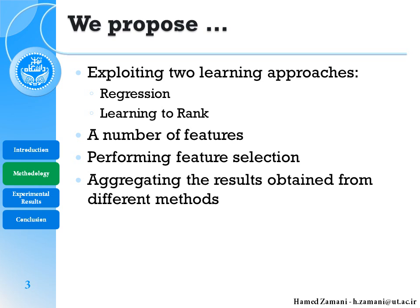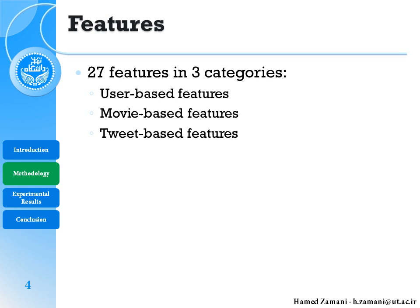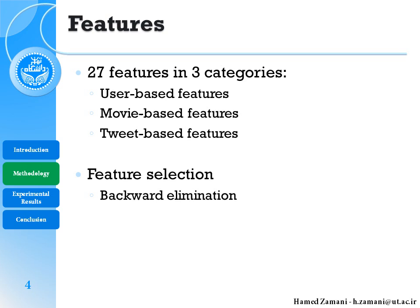We have defined 27 features in three categories: user-based, movie-based, and tweet-based. The user-based features contain only user-specific information, the movie-based features contain only information about the movie such as average rating, and the tweet-based features contain all the information about the tweet including the user's rating of the movie. We also performed feature selection using the backward elimination technique; features retained after selection are colored in blue in the following slides.